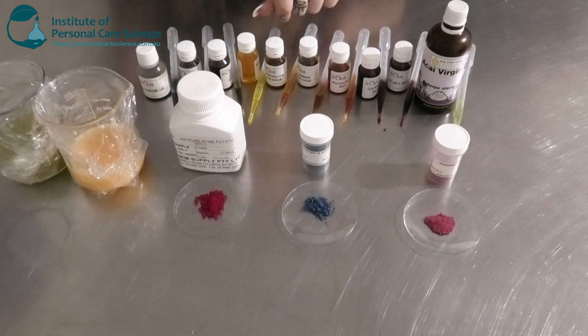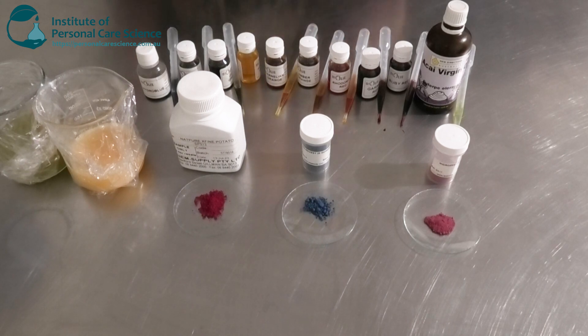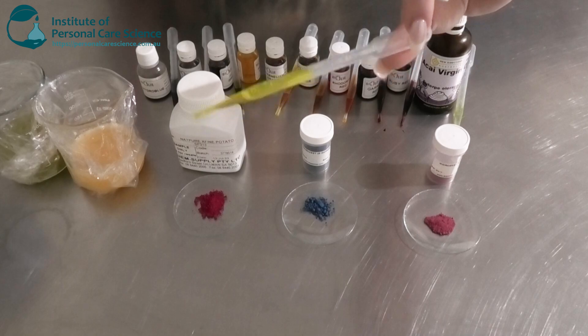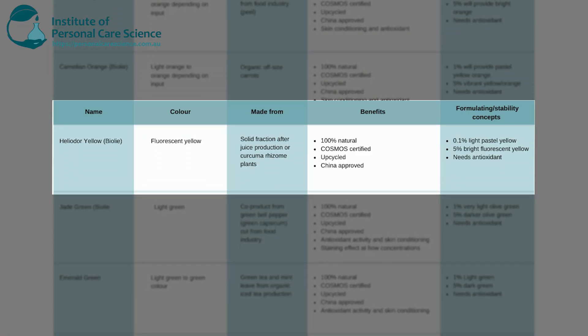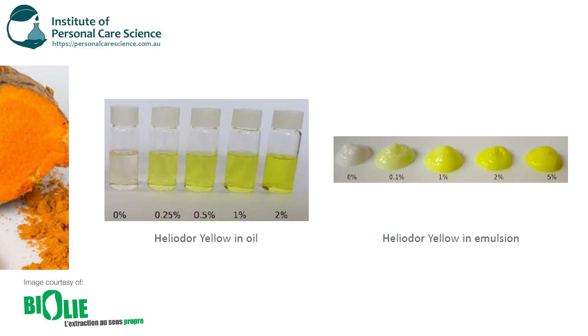The next one is a yellow — the Heliodor Yellow by Biola — which provides a fluorescent yellow color. This is made from the solid fraction after juice production from curcuma rhizome plants, making it an upcycled material. It's 100% natural, Cosmos certified, and China approved. Using quite a low input can still give a beautiful color: 0.1% gives a light pastel yellow, and 5% gives a bright fluorescent yellow.